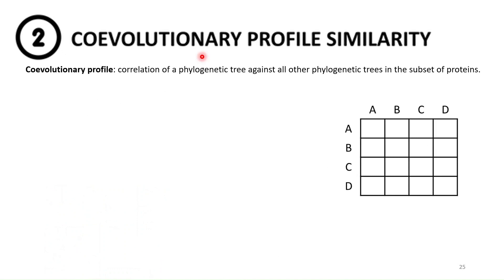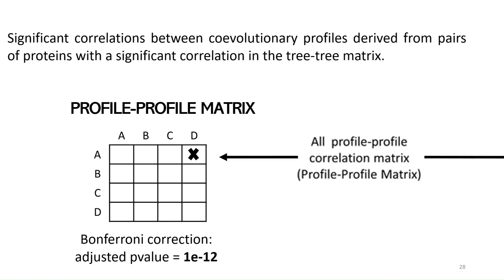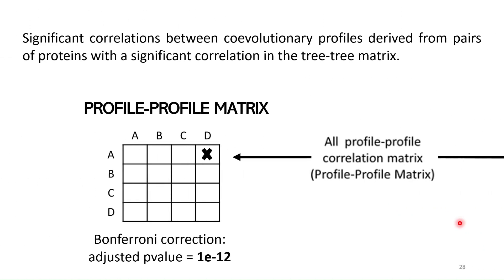In the second step we integrate even more co-evolutionary information because now instead of correlating phylogenetic trees we will be correlating co-evolutionary profiles, which is just a vector that tells us the relationship between one protein and all of the proteins at the same time. We will recompute all of the correlations and then store it into a new matrix, and because this matrix is comparing co-evolutionary profiles we will call it the profile-profile matrix.